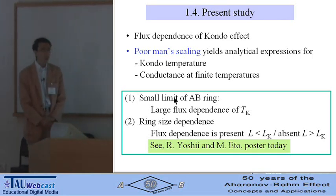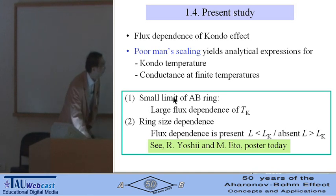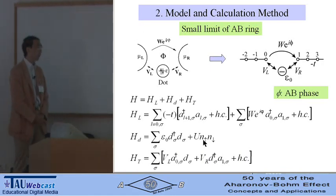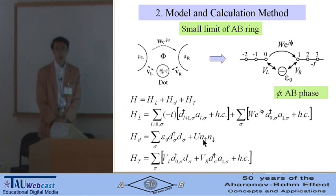Second, I briefly mention the ring size dependence. For the detail, please see the poster by Ryosuke today. So this is our model. Our model is almost the same as Hofstetter's model.